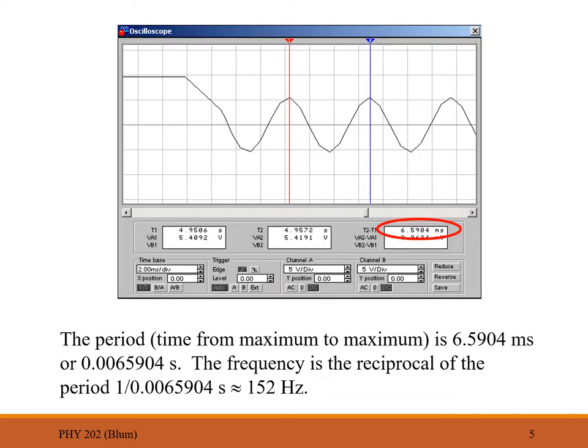One of the main characteristics of an oscillatory waveform is the period — the time to go from one maximum to the next, or one minimum to the next. We can use the two needles of the oscilloscope and place them at consecutive maxima, then use the time difference to find the period.